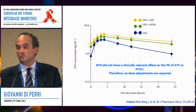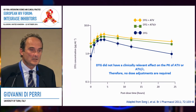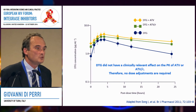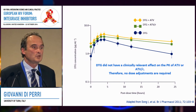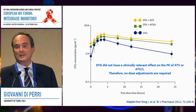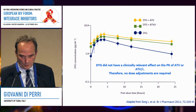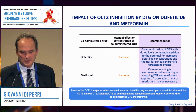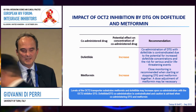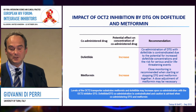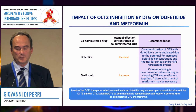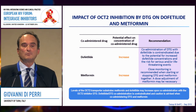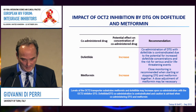The same also applies to dolutegravir, which is much more interesting, because in patients with an extreme viral genetic resistance profile where you might need very high exposure, the last point concerning drug interaction and integrase inhibitors is the possible effect of OCT2 — organic cation transporter 2 — inhibition by dolutegravir, especially on the widely used drug metformin.